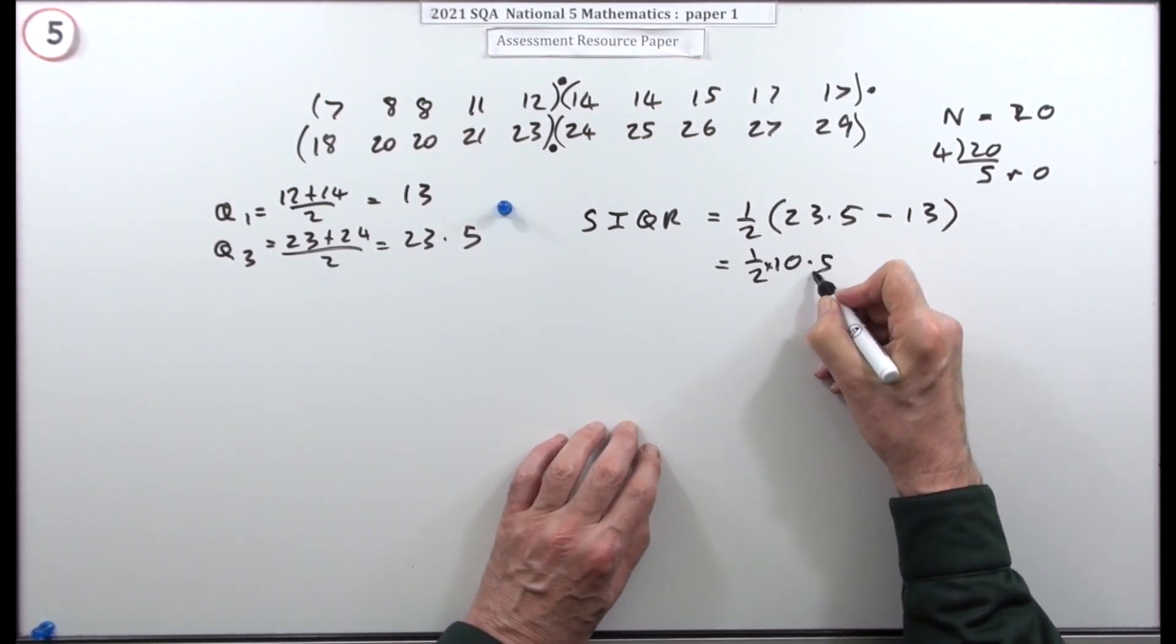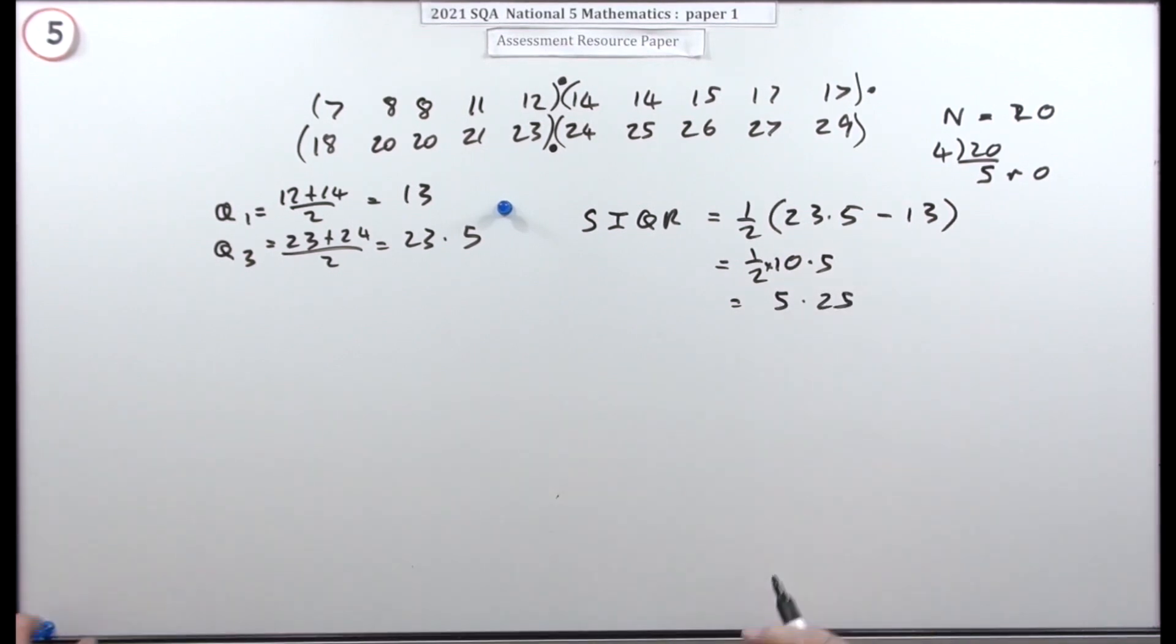The highest quartile is 23.5, the lowest quartile is 13, so it's going to be half of 10.5—that's 5.25, and that's the answer.